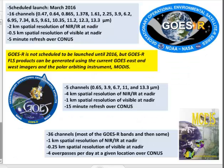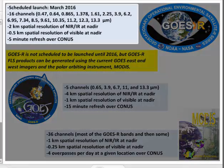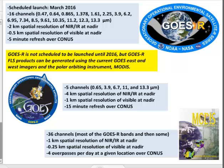GOES-R has spectral, spatial, and temporal capabilities that far surpass the current GOES satellites. It's scheduled to launch in March 2016. While the GOES-R Fog and Low Cloud algorithms were designed to take advantage of the new capabilities offered by GOES-R, they were also designed to be backward compatible so that they could be applied to the current GOES system and to polar orbiting instruments like MODIS.